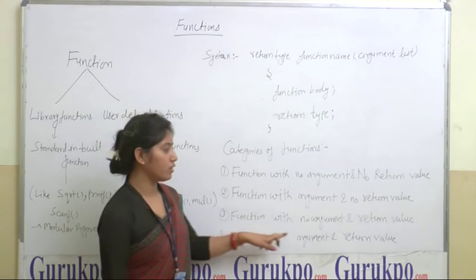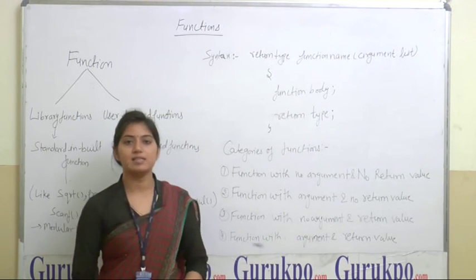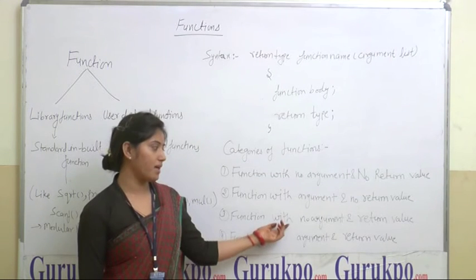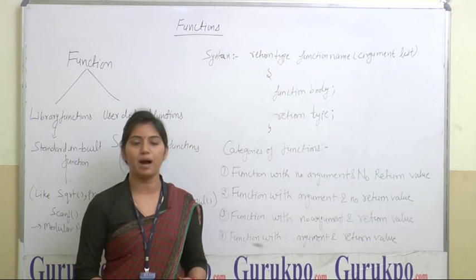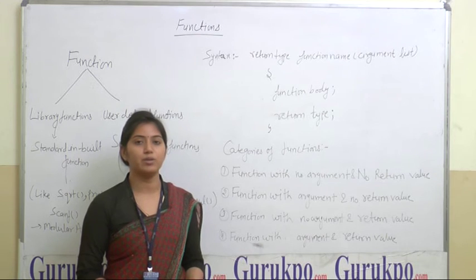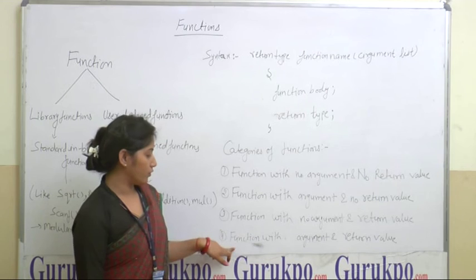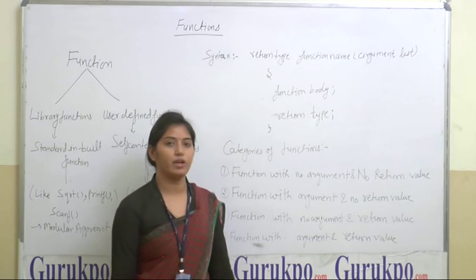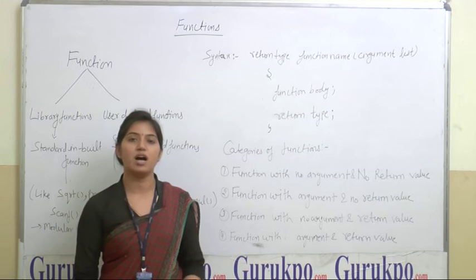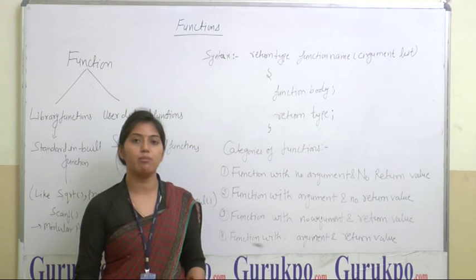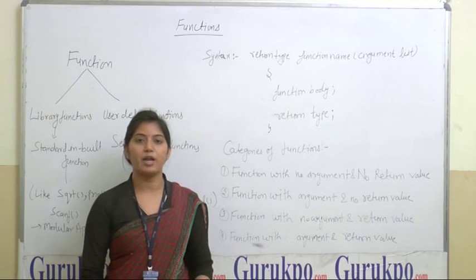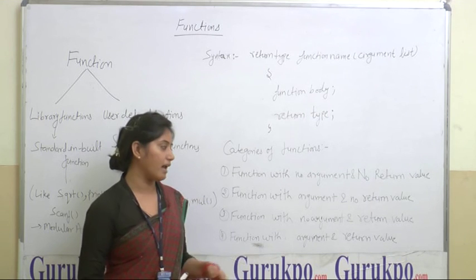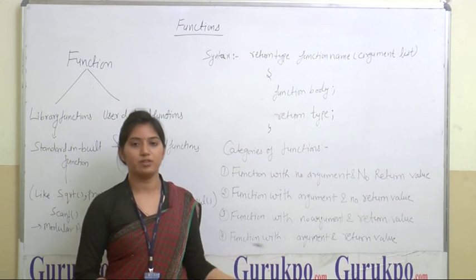The third category is function with no argument and a return value. The fourth category is function with argument and return value — we pass arguments, which can be 2, 3, or more, perform calculations, and return the value for further use.